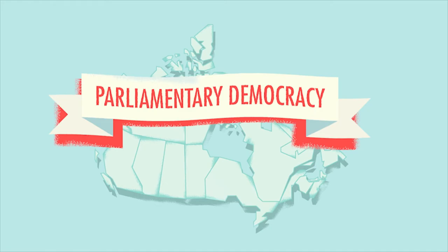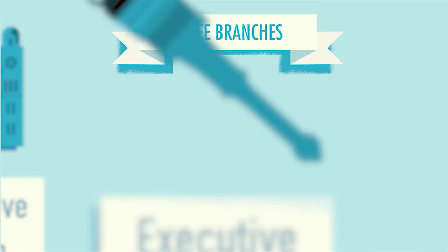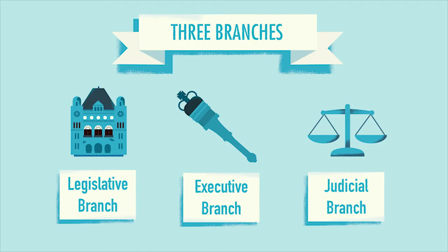Canada is a parliamentary democracy. We elect members to represent us in our federal parliament and our provincial and territorial legislatures. In a parliamentary system, government is separated into three branches. There are many layers, with all of them working together to serve the people.